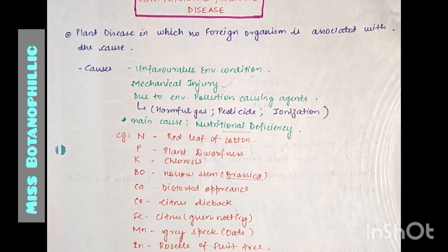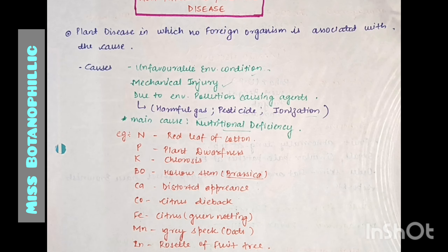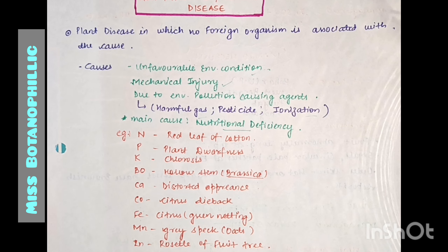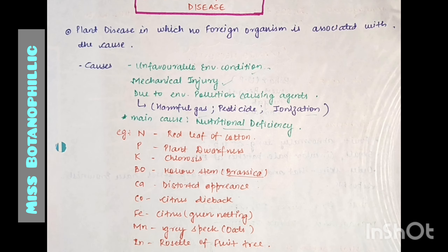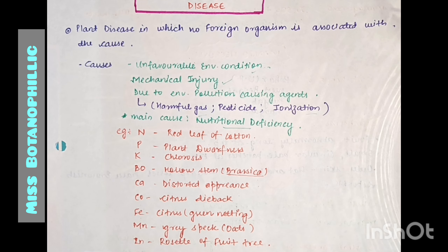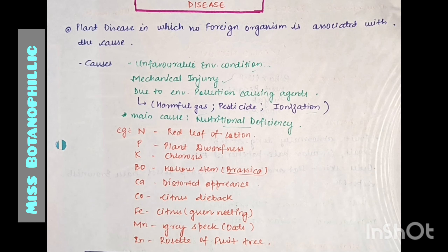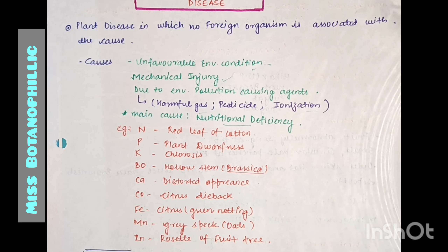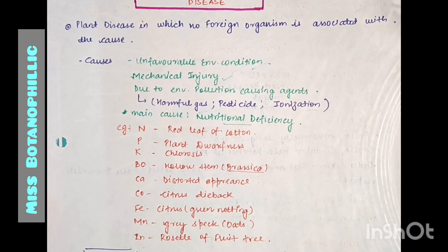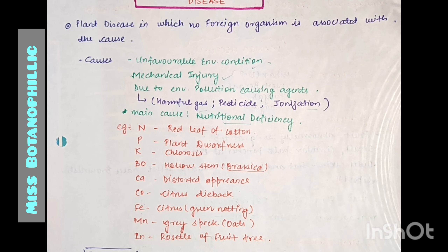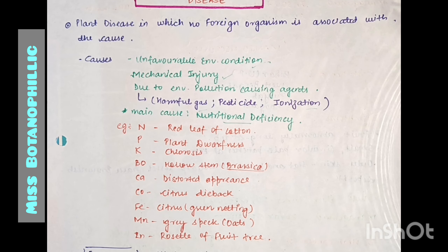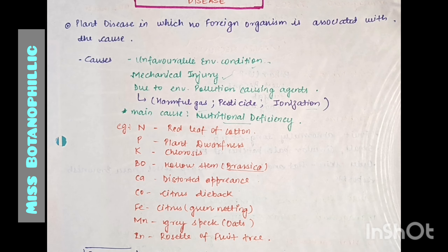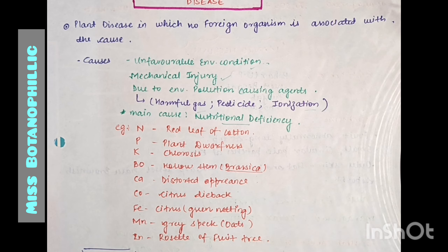Non-parasitic abiotic disease can have different causes. First, unfavorable environmental conditions like excessive heat. There may also be mechanical injury, or environmental pollution such as pesticides, harmful gases, or ionization conditions which also cause non-parasitic disease in plants. The most important cause of non-parasitic disease is nutritional deficiency.